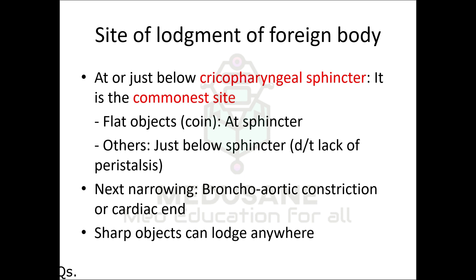A foreign body can lodge at any of these four constrictions; however, the cricopharyngeal sphincter is the most common site of lodgement. A flat foreign body like a coin lodges at the sphincter itself, while other foreign bodies pass the sphincter and lodge below it due to lack of peristalsis. If a foreign body crosses the cricopharyngeal sphincter, it can lodge at the bronchoaortic or cardiac constrictions. A sharp foreign body can lodge anywhere.